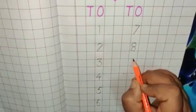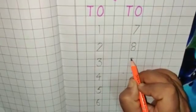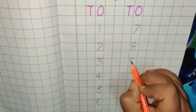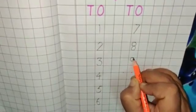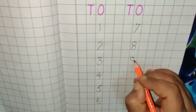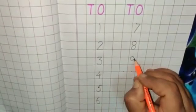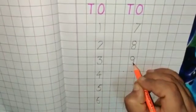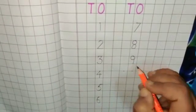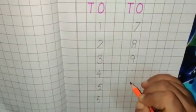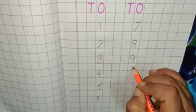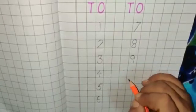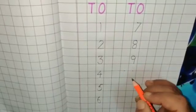For number 9. We will keep pencil on the dot and make a circle like this. Then we will make a standing line at the end of the circle like this. This is number 9.